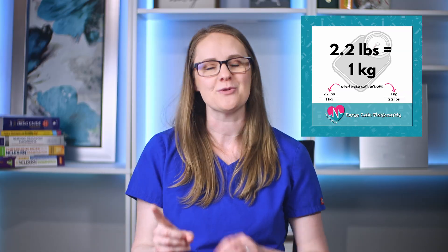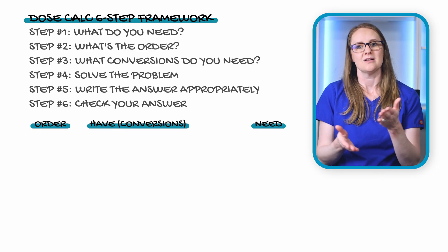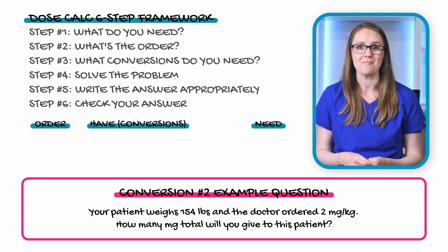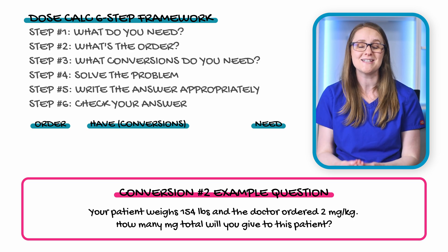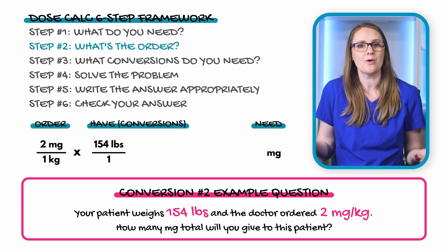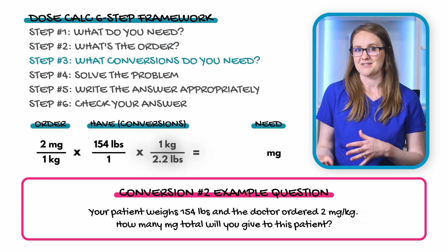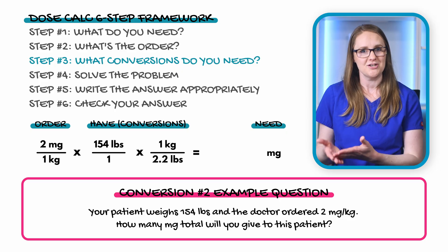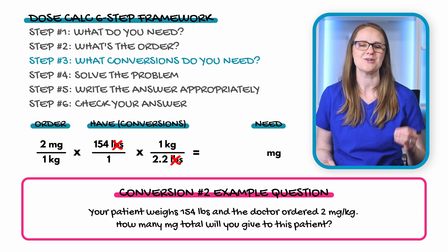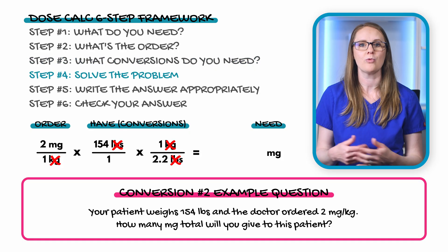Let's use the six-step framework with a weight-based dose calc question. Your patient weighs 154 pounds and the doctor ordered 2 milligrams per kilogram. How many milligrams total will you give? Step one: we need milligrams total dose. Step two: the order is 2 mg/kg for a 154-pound patient. Step three: 154 pounds needs to become kilograms using the conversion 1 kg = 2.2 lbs, then multiply by 2 mg/kg.